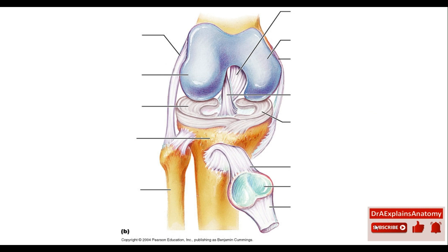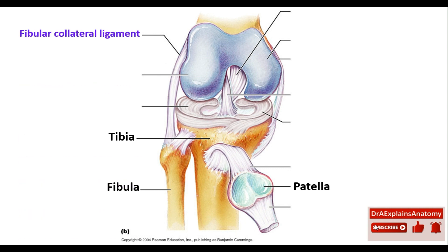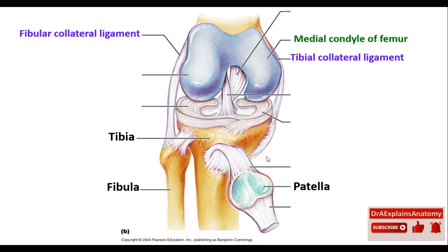Moving to the anterior aspect of the knee joint. This is the tibia, which is the medial bone in the leg. This is the fibula, which is the lateral bone in the leg. And this is the patella. This is the fibular collateral ligament — notice how it connects the femur with the fibula. We also have the tibial collateral ligament, which connects the femur with the tibia. This is the medial condyle of the femur, whereas this is the lateral condyle. The fibula helps you identify the lateral condyle from the medial condyle.